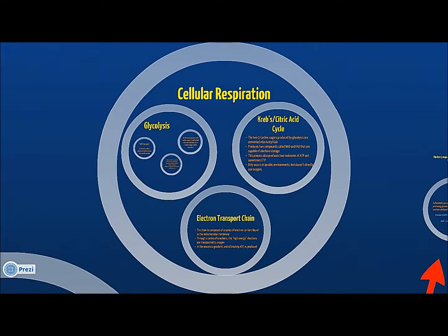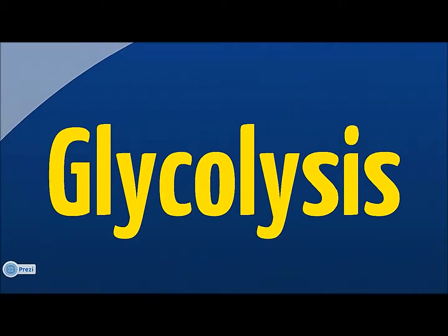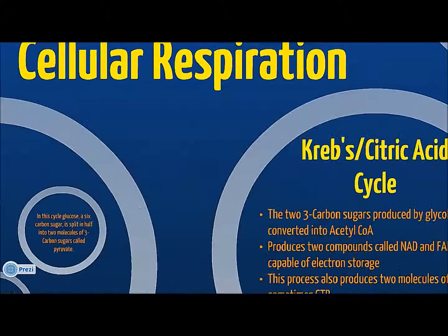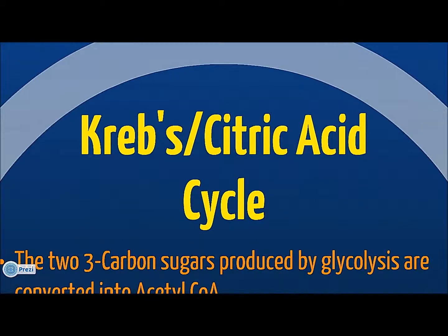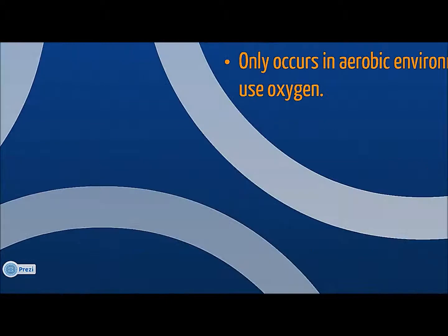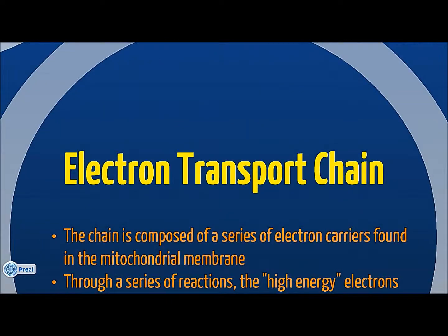Cellular respiration consists of three parts: glycolysis, the citric acid cycle, and the electron transport chain.